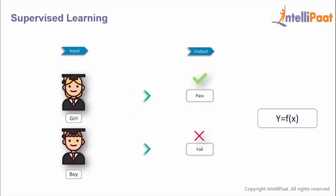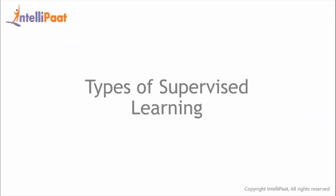Supervised learning is where we have input variables and an output variable. The input variable is denoted by X and the output variable is denoted by Y. In other words, we have some independent variables and a dependent variable, and we try to understand how the dependent variable changes with respect to the independent variables. Here, gender is the independent variable and result is the dependent variable, and we're trying to map a function between gender and result so that whenever we have new input data, we can predict output values.